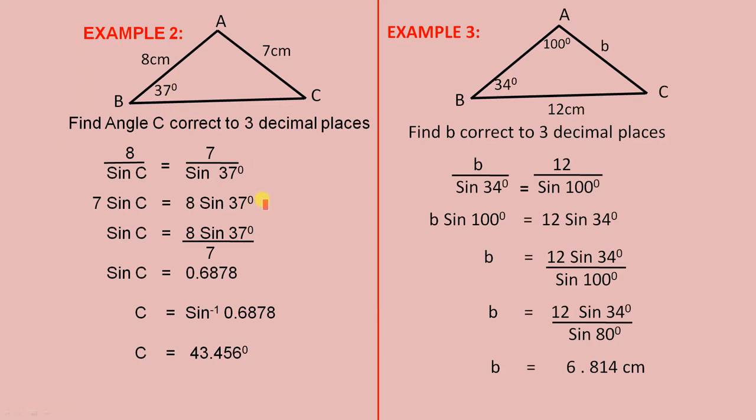Cross multiply to get that line. Divide both sides by 7 to get that line. Put this information into our calculator to get sine C equals 0.6878.